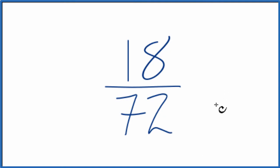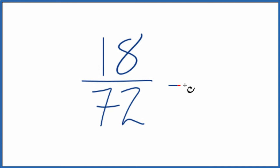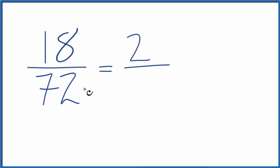We need to find a common factor, something that goes into 18 and 72. And I know that 9 goes into 18 twice, and 72, 9 times 8, is 72.